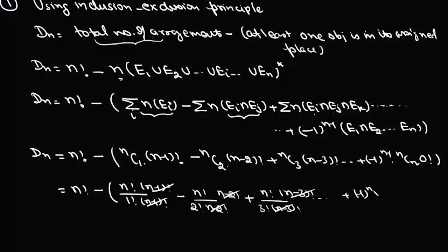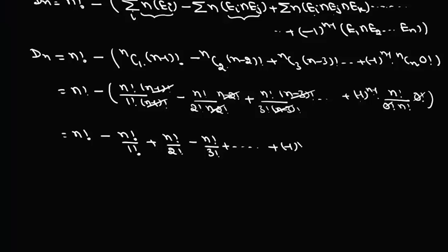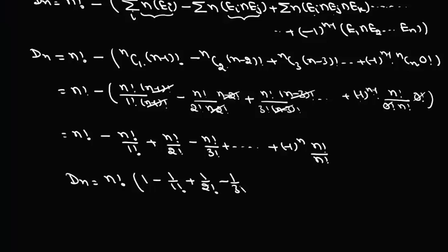After simplification, the C(n,k) and factorial terms cancel, giving D(n) = n! minus n!/1! plus n!/2! minus n!/3!, continuing up to (-1)^(n-1)·n!/n!. Taking n! common, we can write D(n) = n! times (1 - 1/1! + 1/2! - 1/3! + ...).